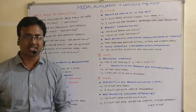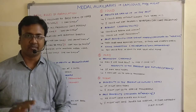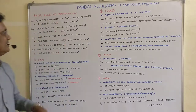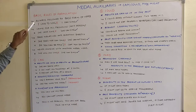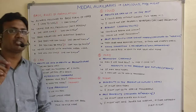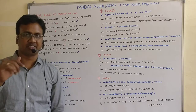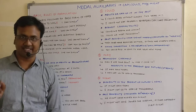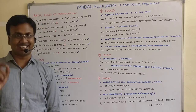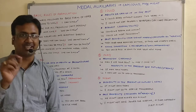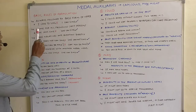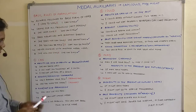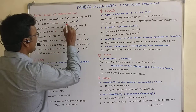Before we begin, let's try to understand four basic rules which are applicable and common for all modal auxiliaries. The first rule: modal auxiliaries are always followed by the base form of the verb, or V1. So you don't say 'can sang' — you only say 'can sing.' You don't say 'I can to sing' — you only say 'I can sing.' It's always followed by base form.